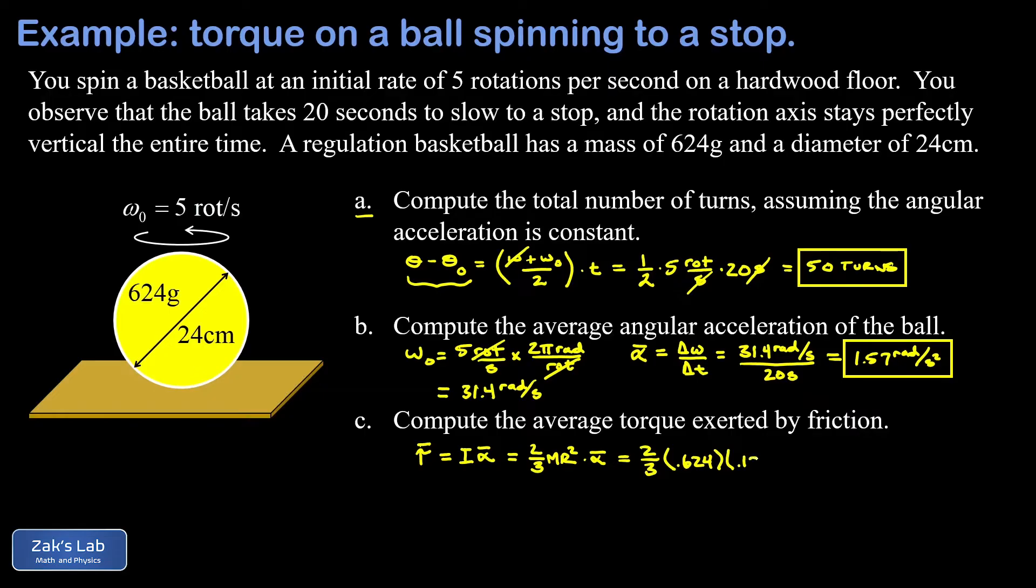And we're going to square that and then multiply by our average angular acceleration, which we just found in part b as 1.57 radians per second squared. Running all these numbers, we end up with an average torque of 0.00940 newton meters, just keeping three significant digits of precision. And we're done.